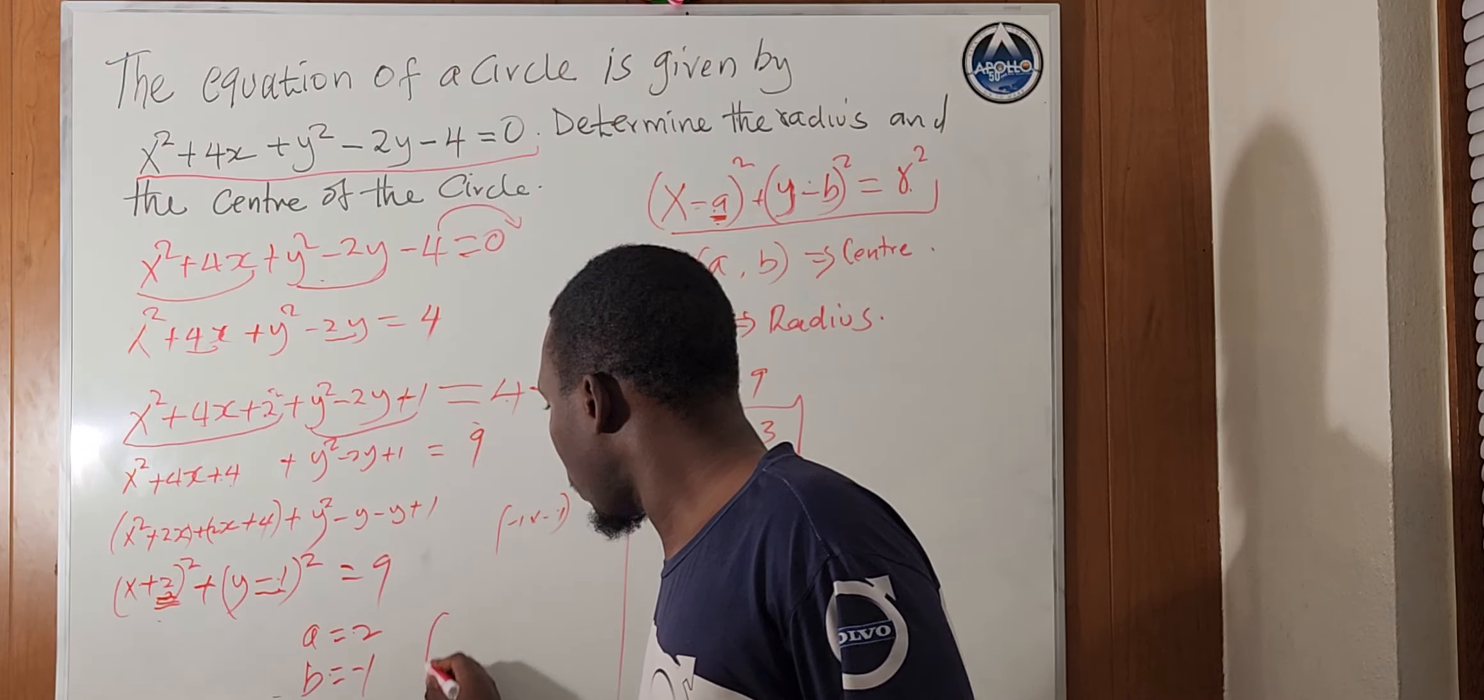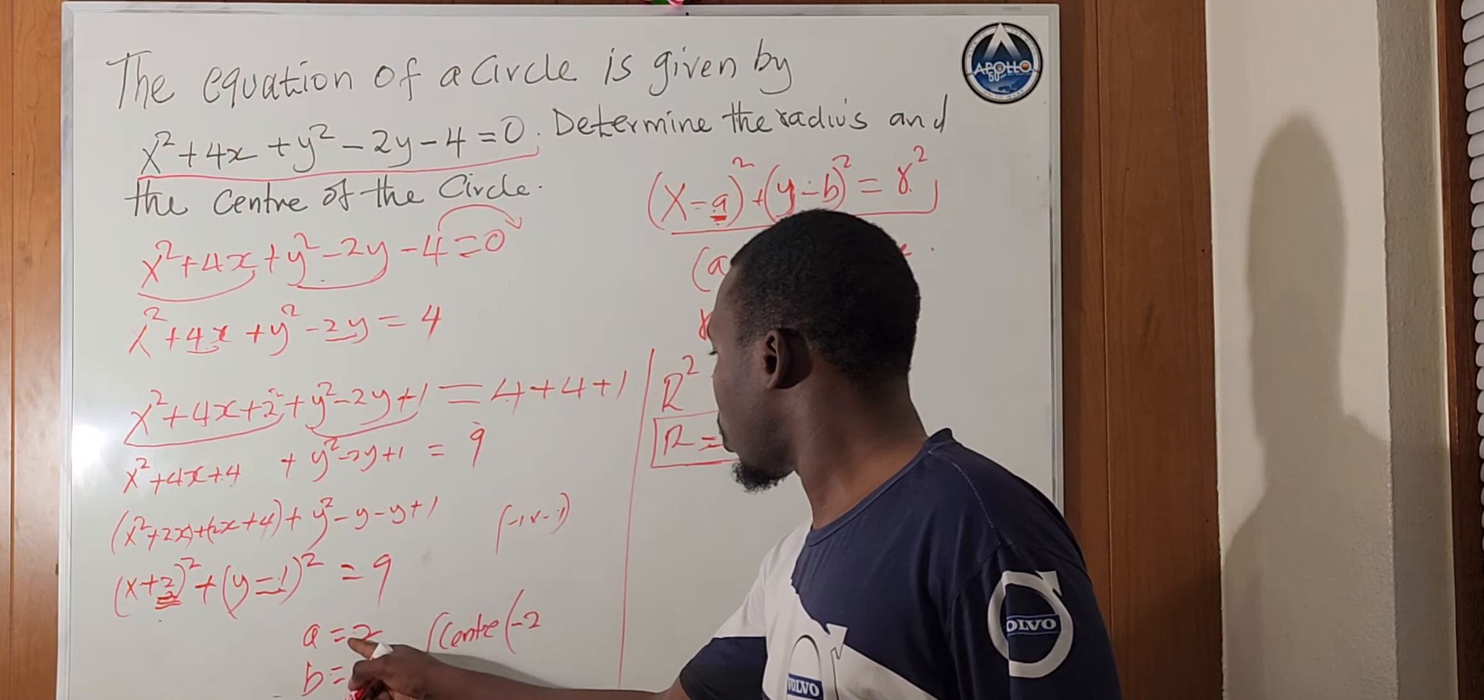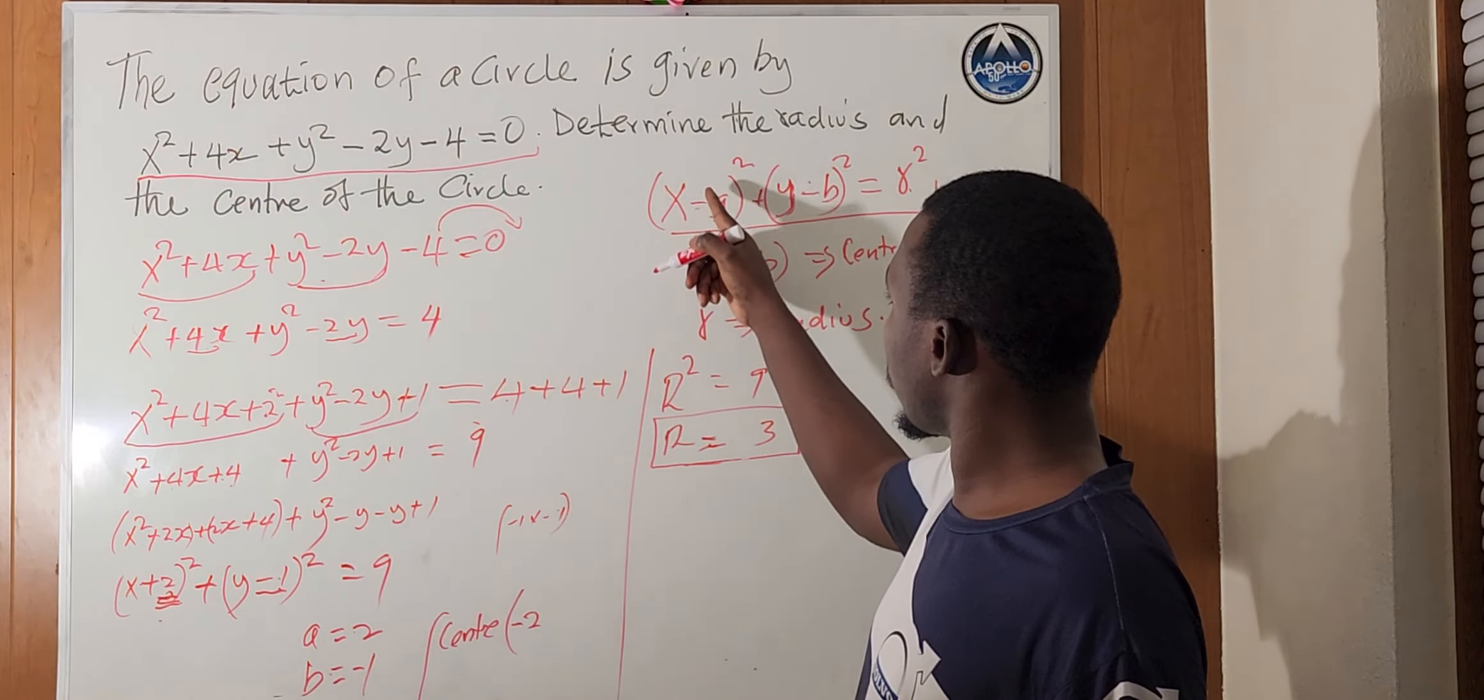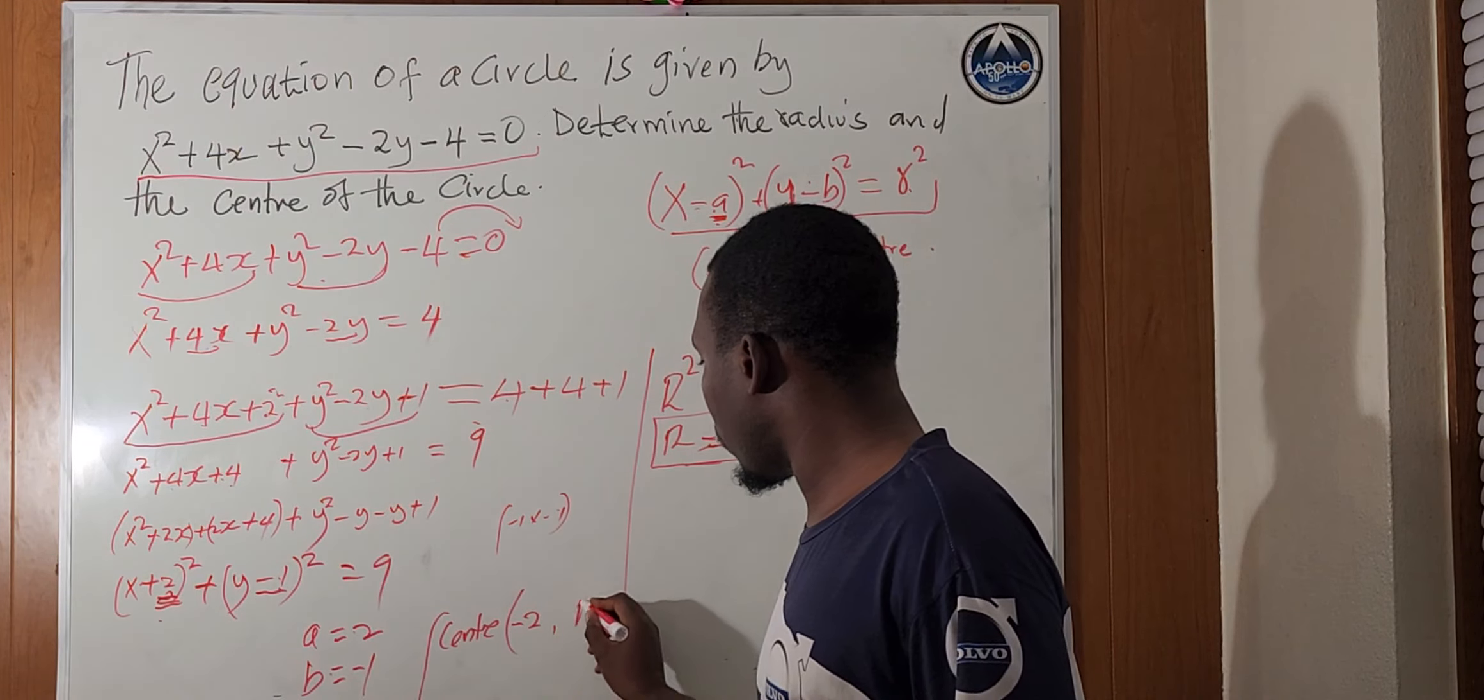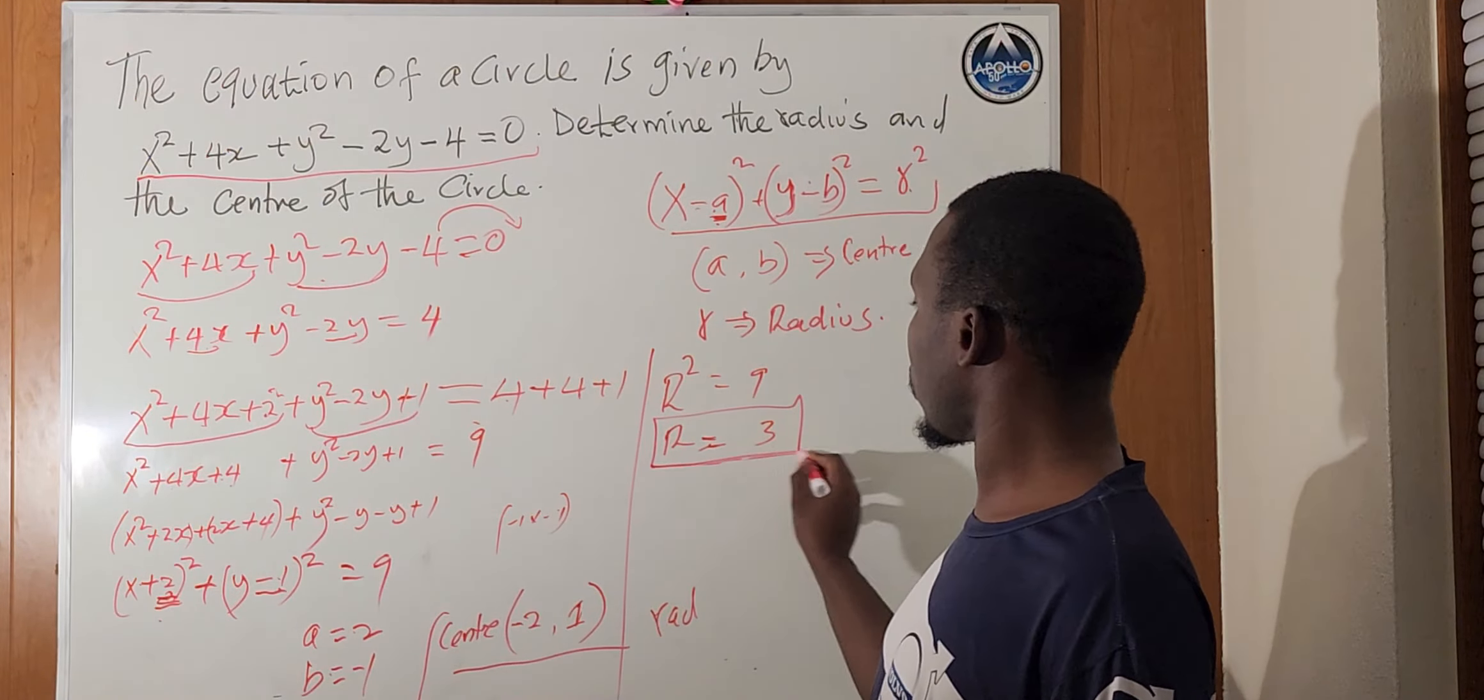So, the final part here for the center, the center of that circle will be a times minus 1 will be minus 2, which is 2 times minus 1. So, that you can consider the sign here. Then, we have minus 1 here already. Minus times minus will be positive 1. So, the center of the circle will be minus 2, comma 1. While the radius will be, the radius we already found here is 3.